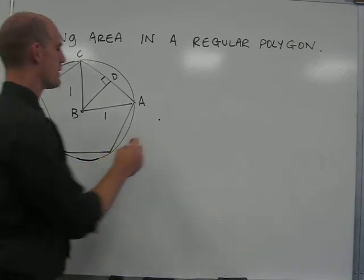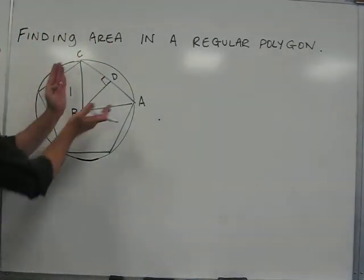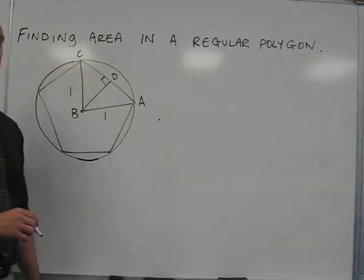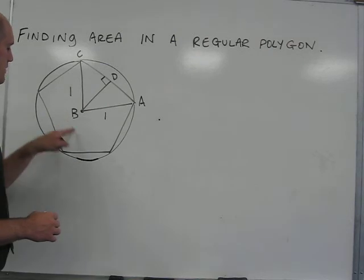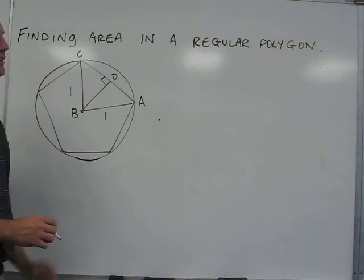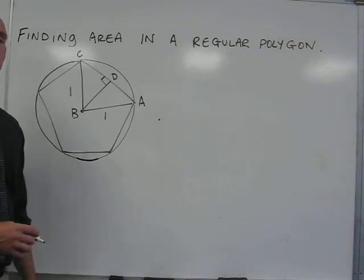So the first step will be to draw a zoomed-in version of the single triangle over here, so we can find the area of it in order to find what five times the area of it would be, which will give us the area of the pentagon.